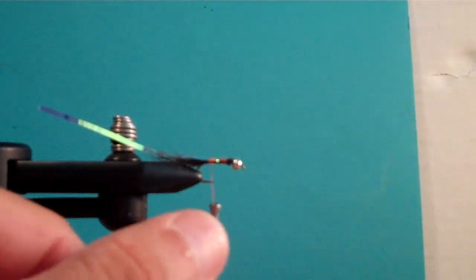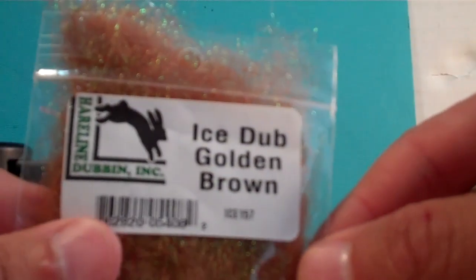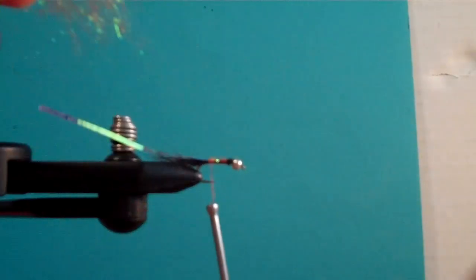And next, we're going to add some dubbing. This is Ice Dub, golden brown. It's a nice buggy looking color. Not very specific.